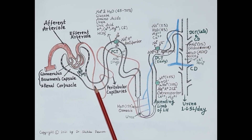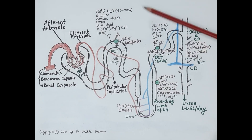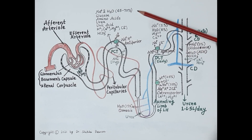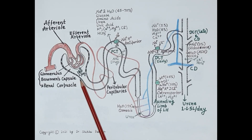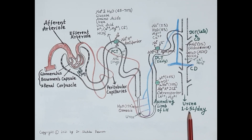Reabsorption of water primarily depends on the reabsorption of sodium. Water is reabsorbed isoosmotically — that is, for every molecule of sodium reabsorbed, a molecule of water is also reabsorbed. Water follows higher sodium concentration. Out of 180 liters of filtrate, only 1 to 1.5 liters of urine is produced, meaning 99 percent of the filtrate is reabsorbed in the renal tubule.